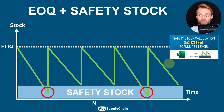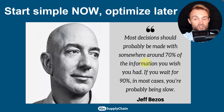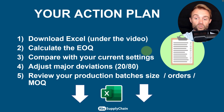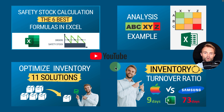My conclusion: start simple and optimize later. As Jeff Bezos said, if you wait for perfection and 90% of the information, you won't make decisions fast enough. My action plan for you: download the Excel file and calculate your EOQ, compare with your current settings and adjust major deviations — especially for your top 20% products by sales and inventory. Then review and adjust your production batch sizes, order quantities, and minimum order quantities, which are often tied to this EOQ.